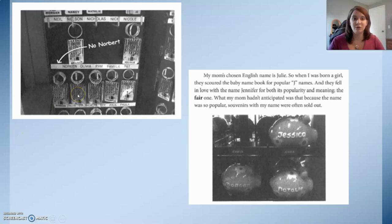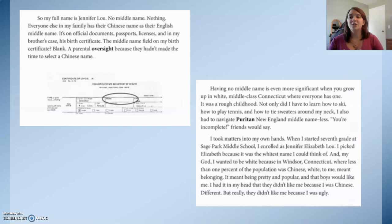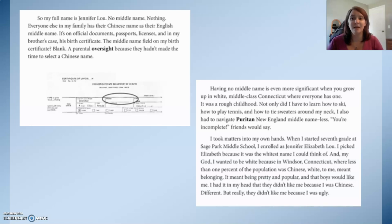So now we have two conflicting issues: one, they can't find any souvenirs with the name Norbert, and two, they can't find souvenirs with Jennifer because everyone else wants one. My full name is Jennifer Liu — no middle name. Everyone else in my family has their Chinese name as their English middle name, on official documents, passports, licenses, and in my brother's case, his birth certificate. The middle name field on my birth certificate? Blank — a parental oversight because they hadn't made the time to select a Chinese name. You can see Jennifer's name on the birth certificate and how her middle name is empty.